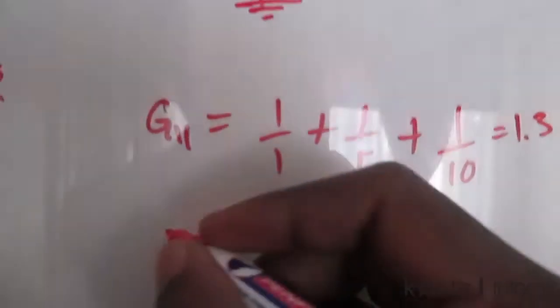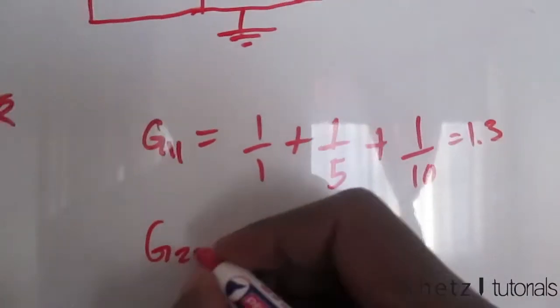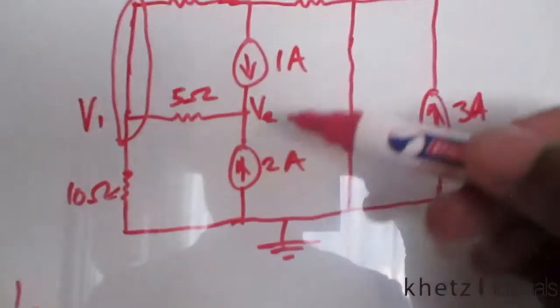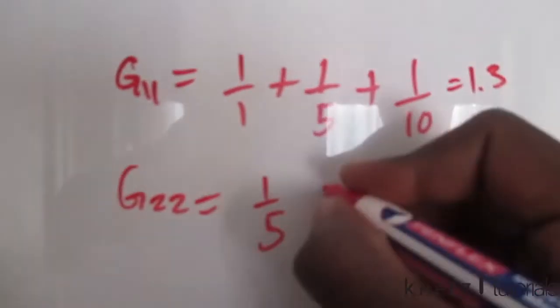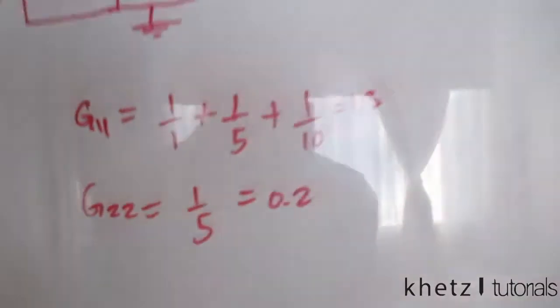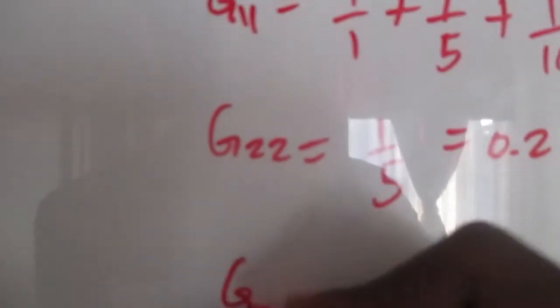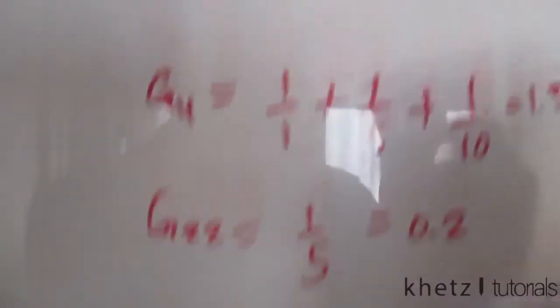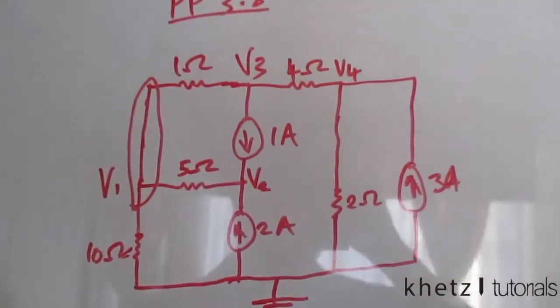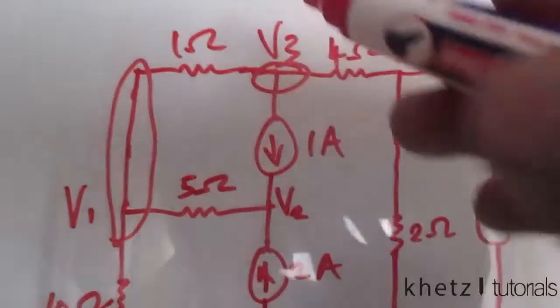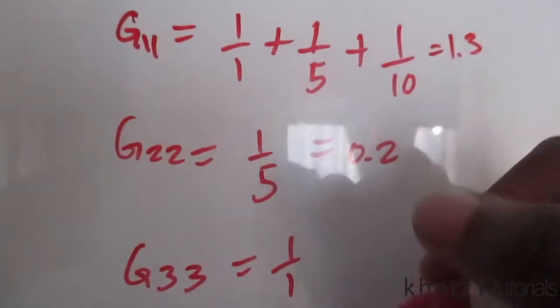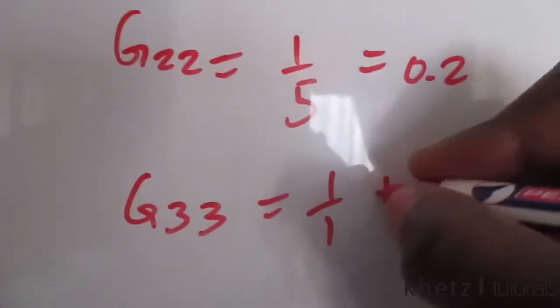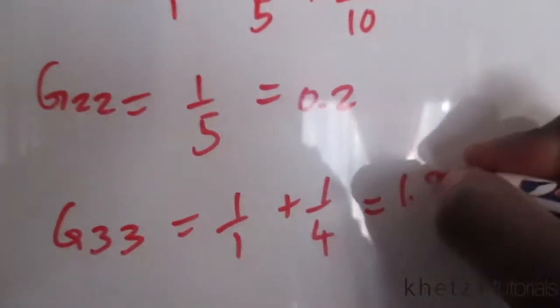Moving on to G_22, which is the sum of all conductances connected to node 2. There's only one resistor there, so that gives 0.2. Then G_33 at the third node: 1/1 + 1/1 + 1/4, which gives 1.25.